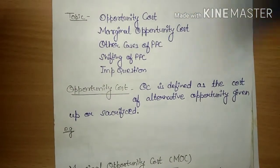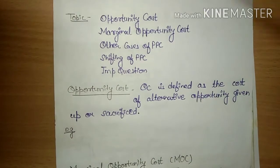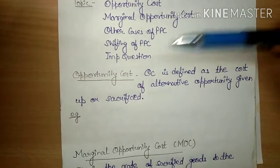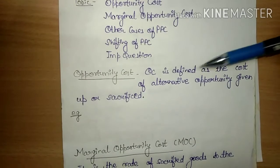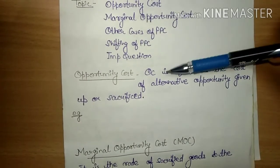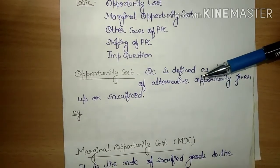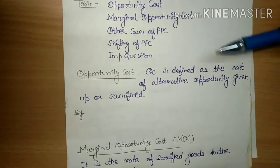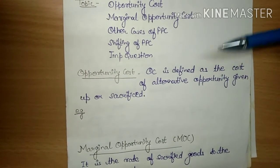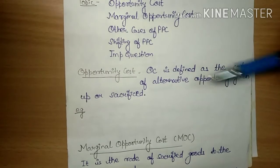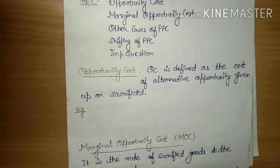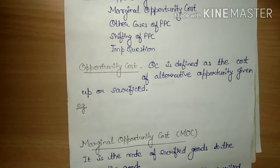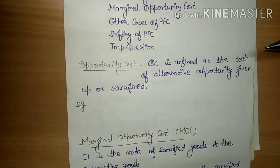Thodi si lambi hogi video, lekin aap log start karte chaliye. Dekho, opportunity cost means — opportunity cost is defined as the cost of alternative opportunity given up or sacrificed. Iska yeh matlab hua ki jaise ki aapke paas alternative products hain, ya alternative goods hain, jinmein se aap dono mein se kisi ek cheez ka hi istemal kar sakte hain.